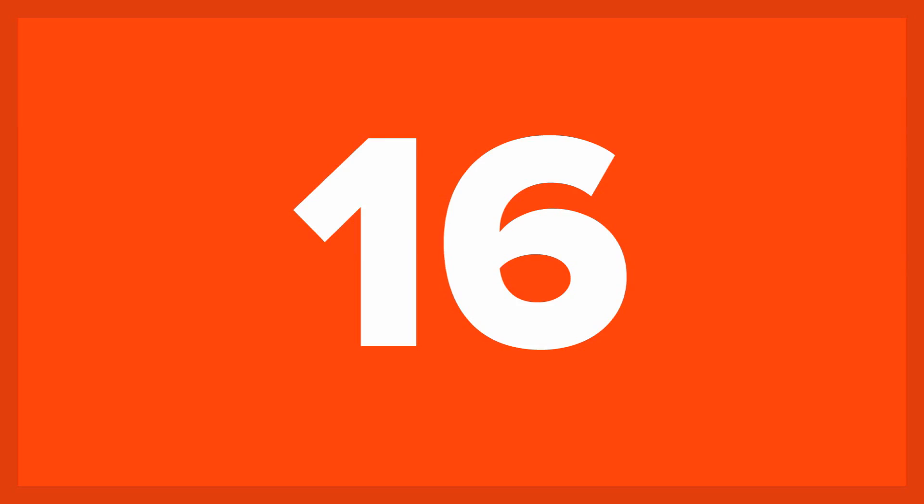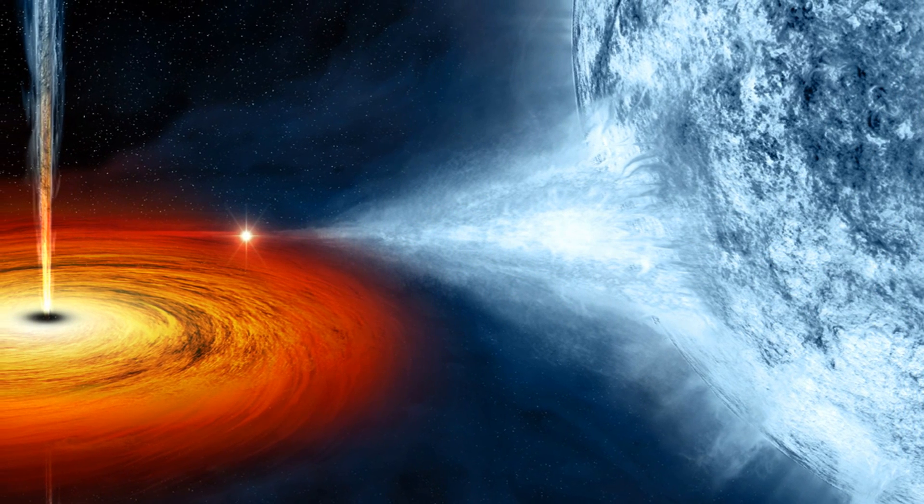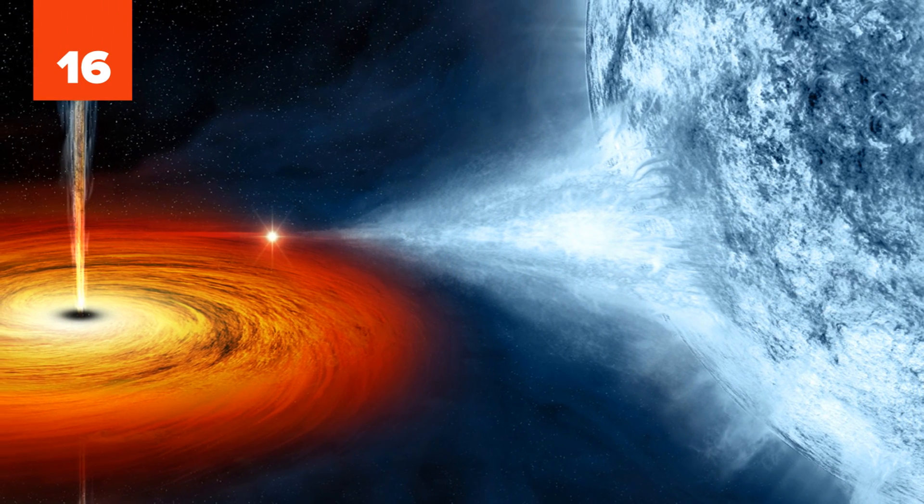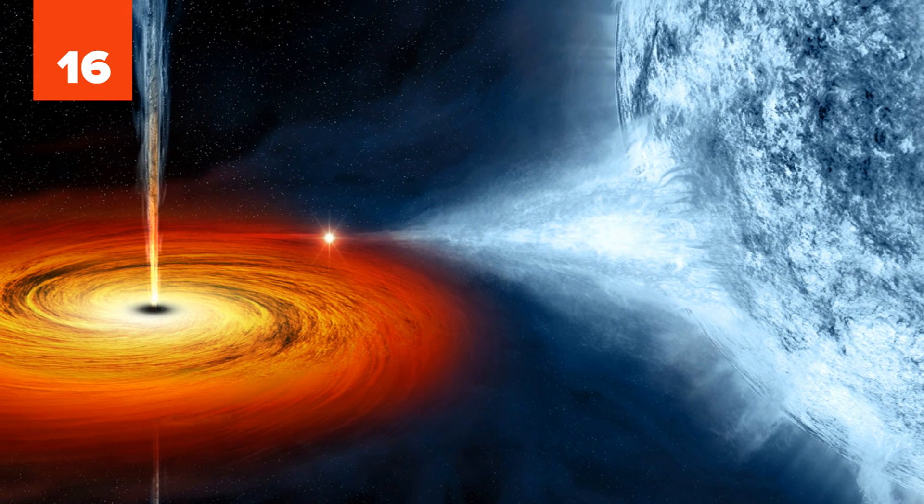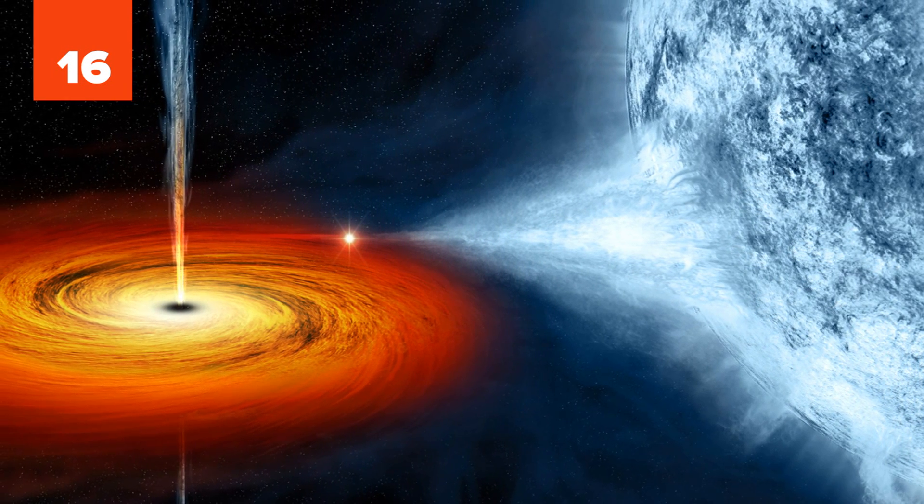Number 16: And What Happens When Black Holes Collide? Theories suggest that when two black holes come close enough to where they can't escape each other's gravity, they will merge and become a big black hole. Such an event would be extremely violent.